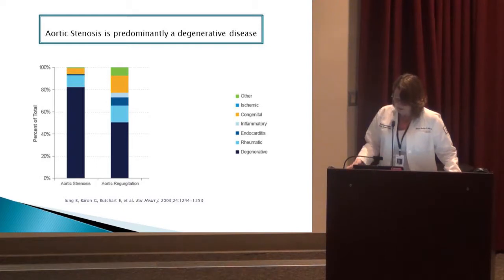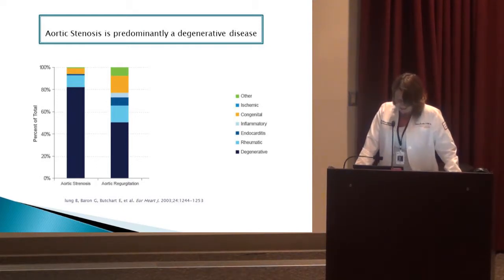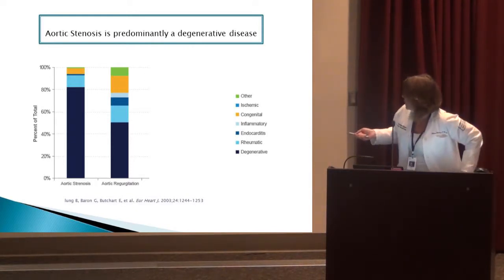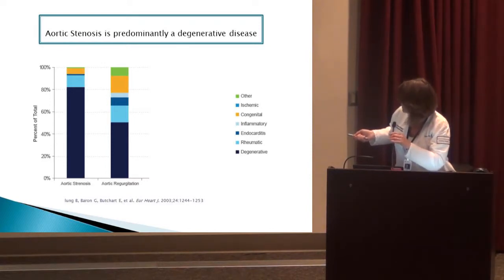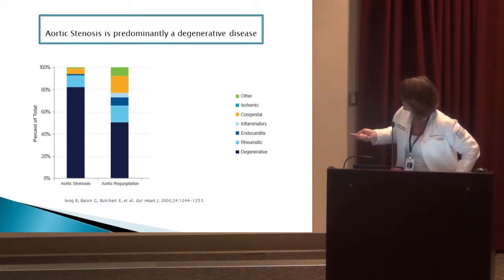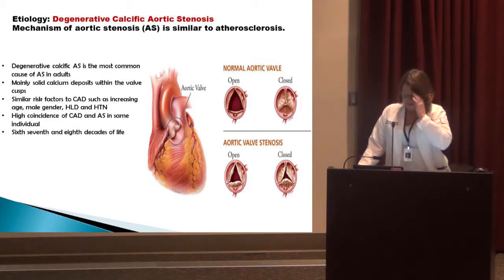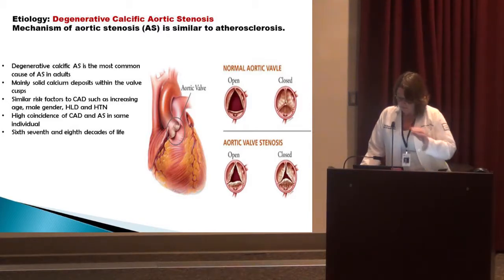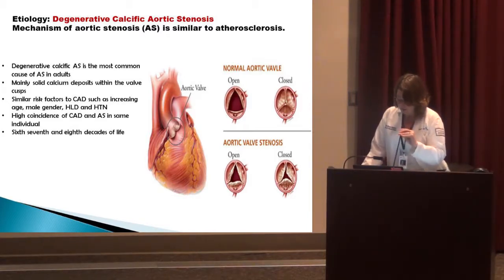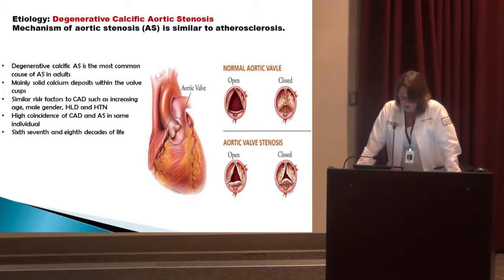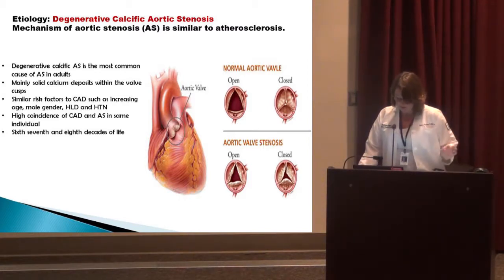Aortic stenosis is predominantly a degenerative disease, as you can see on the slide here. The navy color represents most of those patients — it's all due to degeneration of the valve. Degenerative calcific aortic stenosis is similar to atherosclerosis, mainly solid calcium deposits within the valve.